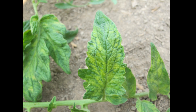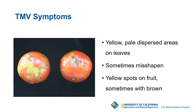Here's another shot of the disease on tomatoes. This is more typical of what we see — a subtle effect. There might be some puckering or misshaping going on, like the leaf in the back. The leaf on the front is pretty typical. It will usually be throughout the whole plant and often on more than one plant. On the fruit, you'll see yellow pale areas throughout. Sometimes there are brown areas associated with that — more like mosaic spots. The yellow pale dispersed areas on leaves are the most common symptom.